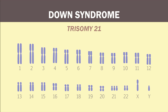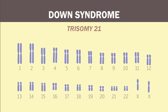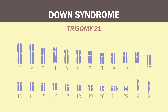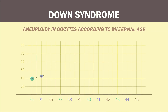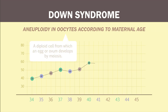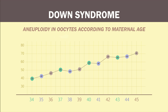Down syndrome, or trisomy 21, can happen in males or females and is not dependent on the transmission of sex chromosomes. It is more commonly found in pregnancies of older women, because oocytes frozen in prophase 1 gradually become more prone to errors in copying as the woman ages, leading to an increase in genetic abnormalities.